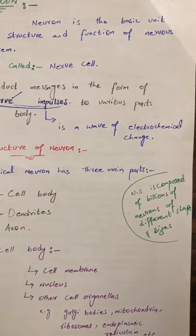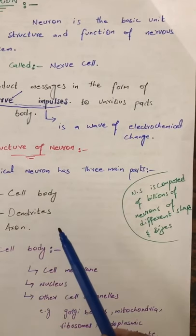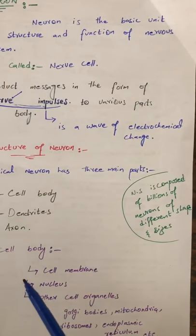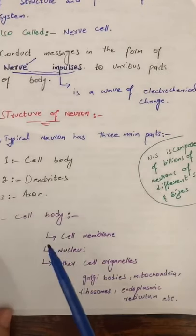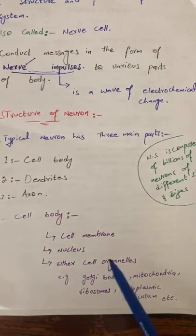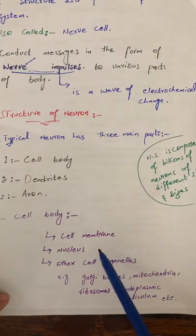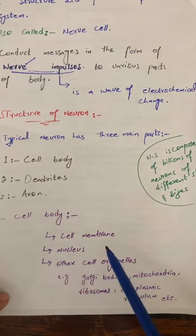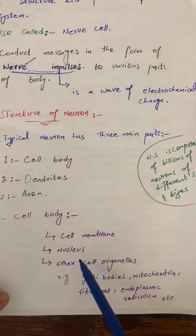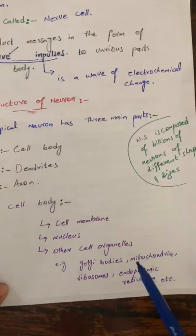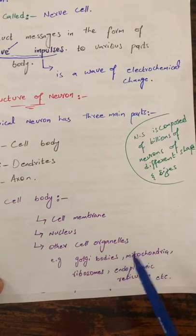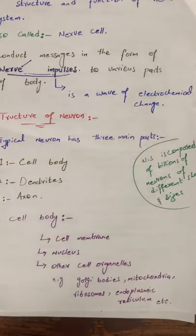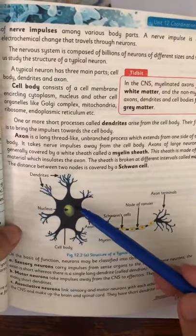The nervous system has billions of neurons in different sizes and shapes. The structure of a neuron consists of the cell body, dendrites, and axon. The cell body is made up of the cell membrane, which surrounds the cytoplasm. It also contains the nucleus at the center, and other organelles such as mitochondria, ribosomes, and endoplasmic reticulum.